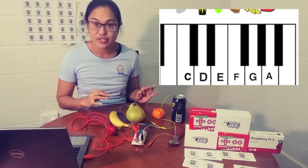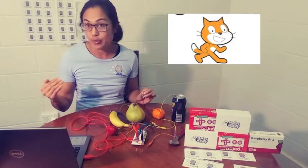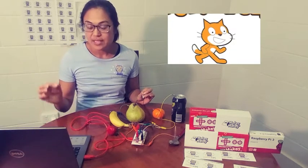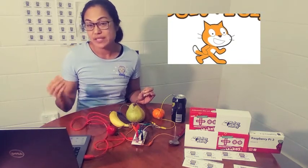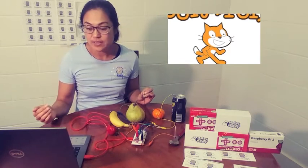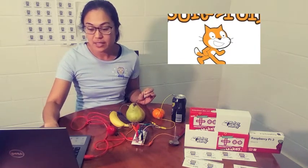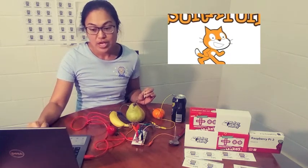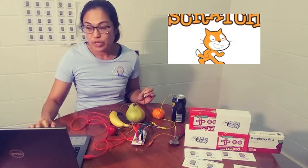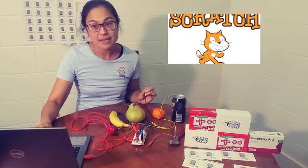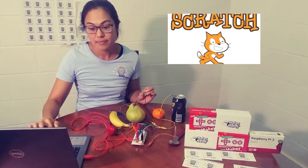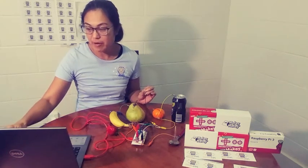Now using these items we code our program up in Scratch. In Scratch we use event blocks that make use of pressing the keys on the laptop. So for example we've used the space key and we've used the up arrow.